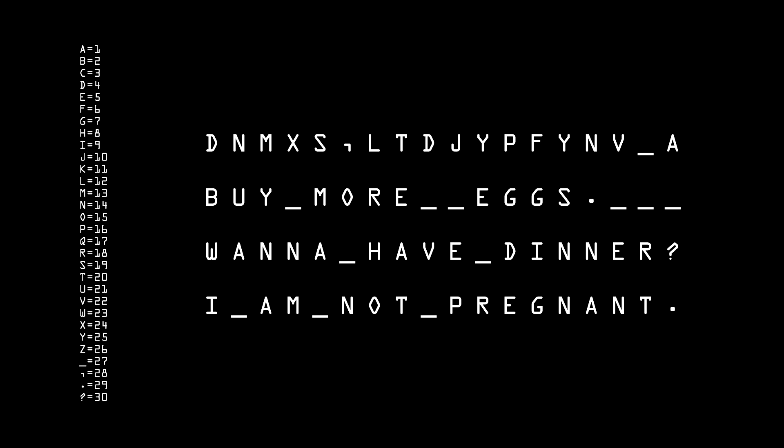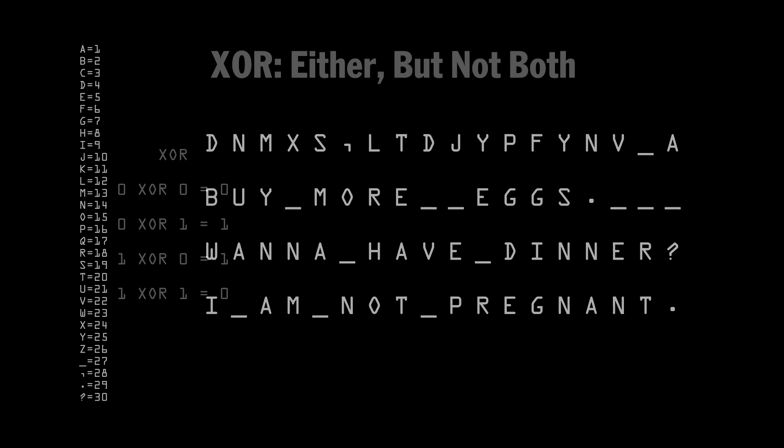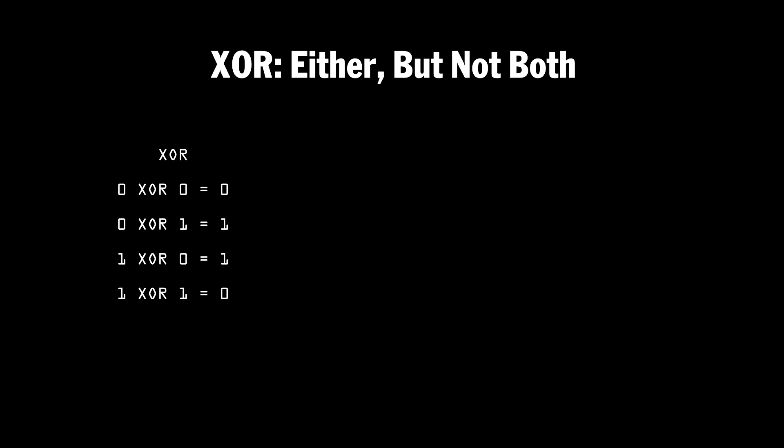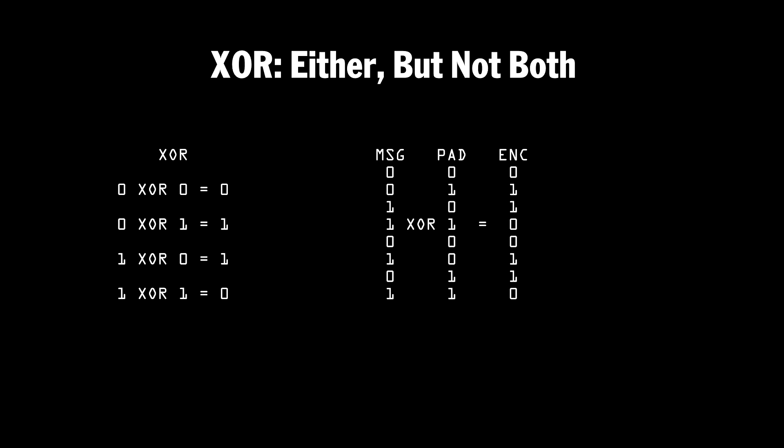In computers, all of the numbers are binary — just strings of ones and zeros. So what Alice would do there is take the one-time pad and use a Boolean operator called XOR, or Exclusive OR, and use that with the message and the pad to get the encrypted result. Bob would then take the result and XOR it with the one-time pad and get the original message back. This operator is used all over the place in encryption.